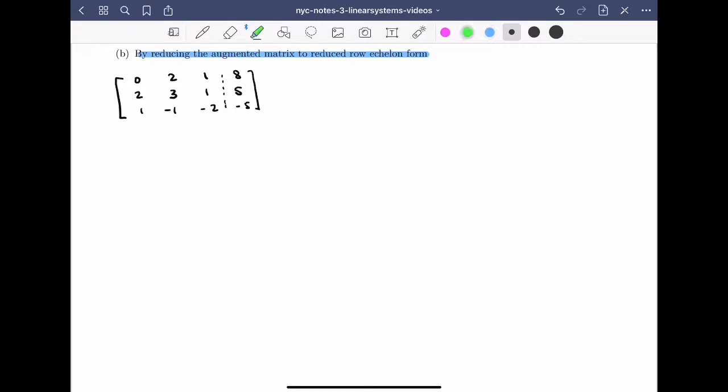As we've seen previously, the first thing that we want to do is put a 1 in that highlighted green space. I can do this using a row swap. In particular, I can swap row 1 with row 3, giving me 1, minus 1, minus 2, minus 5; 2, 3, 1, 5; and 0, 2, 1, 8.